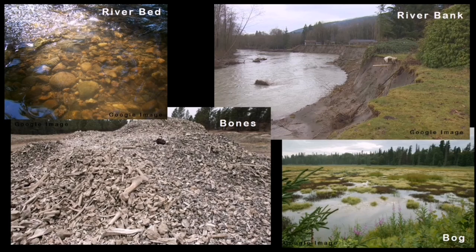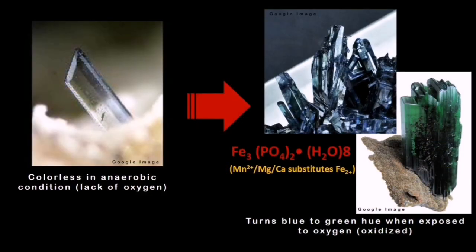Vivianite is actually colorless in an anoxic condition — a condition lacking oxygen. It turns bluish to greenish when exposed to oxygen; oxidation changes its color.